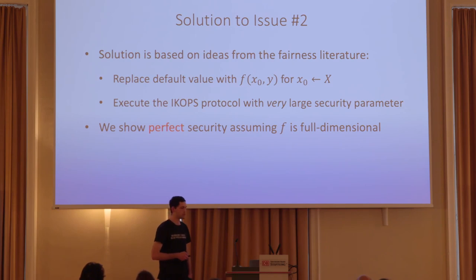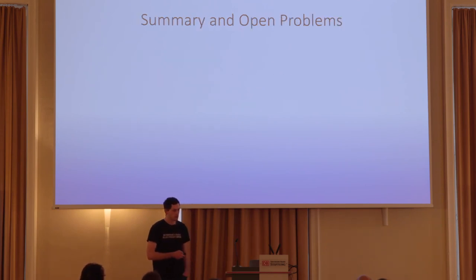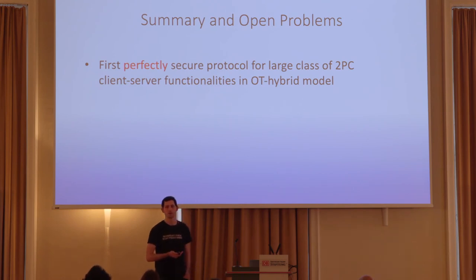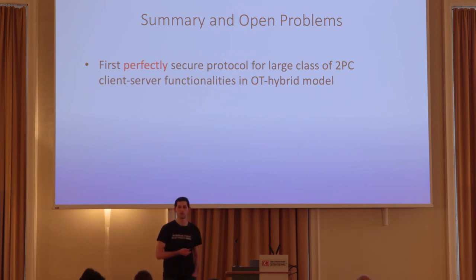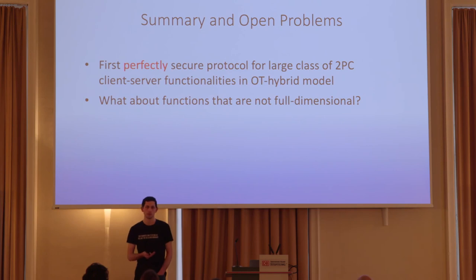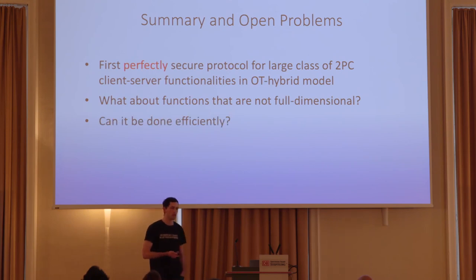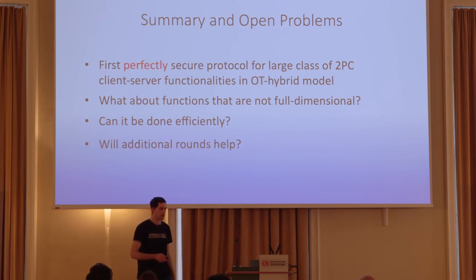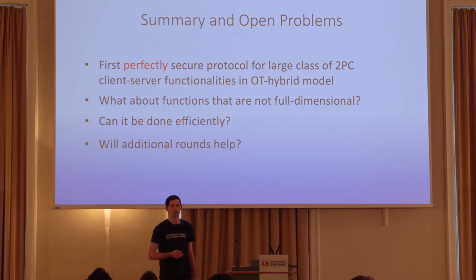To sum things up: we gave the first perfectly secure protocol for a very large class of client-server functionalities in the OT hybrid model, which is also a single-round protocol. Natural open questions remain: what about functionalities that are not full-dimensional, such as equality — we don't know the status of that function. Another question is about efficiency — our protocol is not very efficient since we execute ICOPS with a very large security parameter. And will additional rounds help in answering these questions?